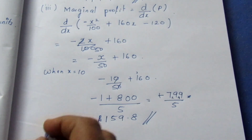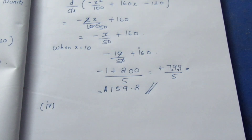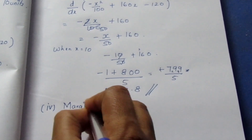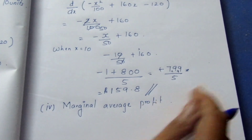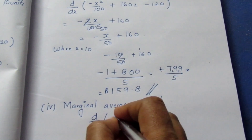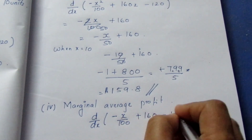For the fourth subdivision, marginal average profit at an output of 10 units. Marginal average profit means we differentiate the average profit function found in the second subdivision. So d by dx of average profit, which is minus x by 100 plus 160 minus 120 by x. Differentiating: minus 1 by 100 for the x term, the constant 160 gives 0, and the minus 120 by x term in the denominator differentiates to give plus 120 by x squared.